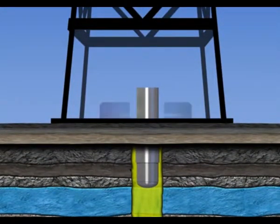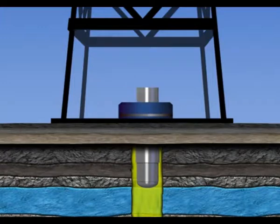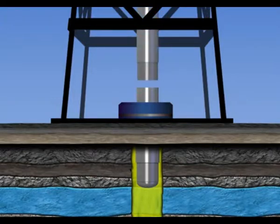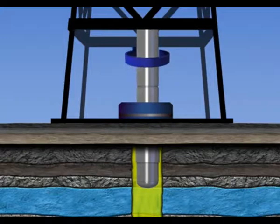The casing string is made of numerous joints of the same size screwed together at the collar. The casing pipe is selected according to its outer diameter, its wall thickness, its length, its weight by unit length, and the grade of steel it is made of.